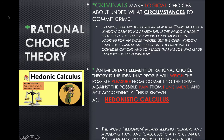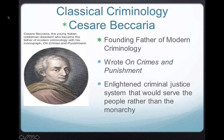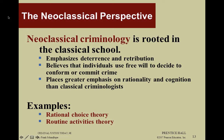This is known as hedonistic calculus: hedonism means seeking pleasure and avoiding pain, and calculus is a type of math — so hedonistic calculus is essentially doing math around the idea of seeking pleasure and avoiding pain. You want to remember Cesare Beccaria — there will be a question asking who is the founding father of modern criminology, and the answer is Beccaria. The neoclassical perspective is rooted in the classical school, emphasizes deterrence and retribution, and believes individuals use free will to decide whether to conform or commit crime, placing greater emphasis on rationality and cognition than classical criminologists.